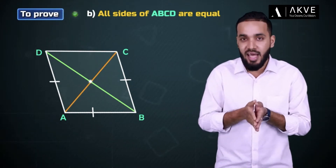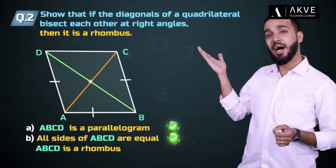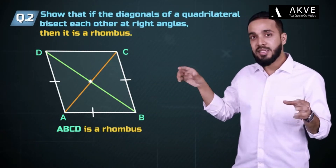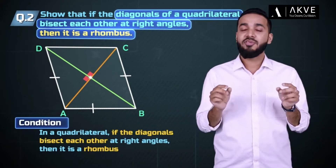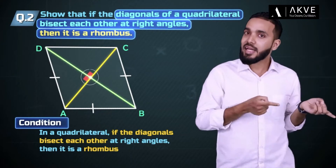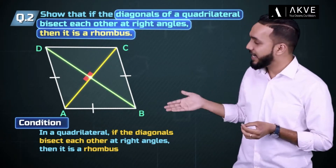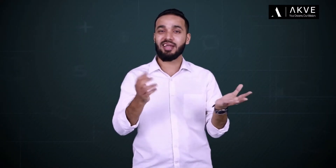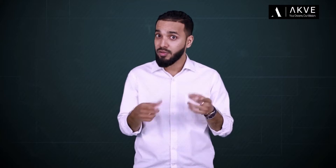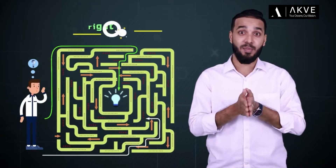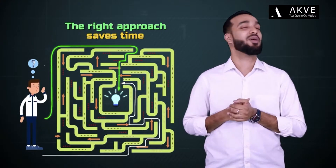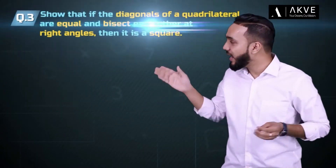It's safe to say then that ABCD is a rhombus. While proving this, we unknowingly proved another condition: that in a quadrilateral, if the diagonals bisect each other at right angles, then it is a rhombus. That was pretty interesting. We could have actually solved it in a minute, but I wanted to show you how a good approach will always help you save time. Now let us quickly solve another one.